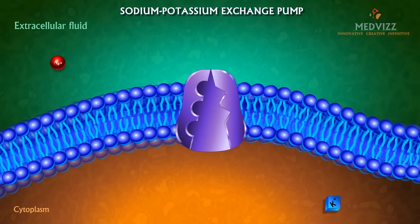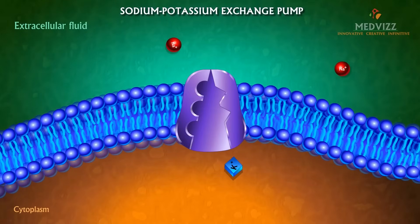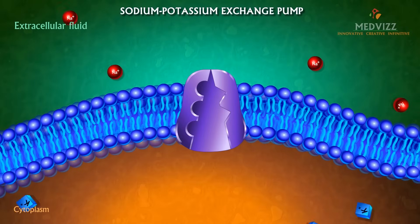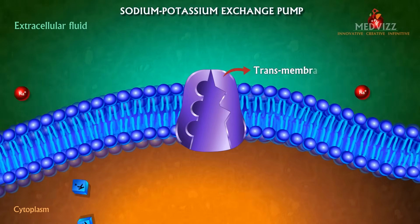The sodium potassium pump is an active transport mechanism that is driven by the breakdown of ATP and works through a series of conformational changes in a transmembrane protein.